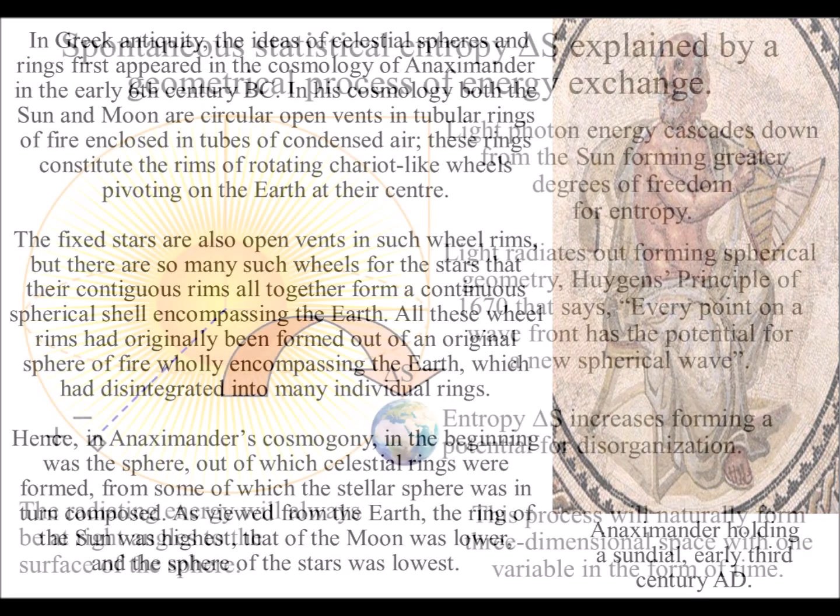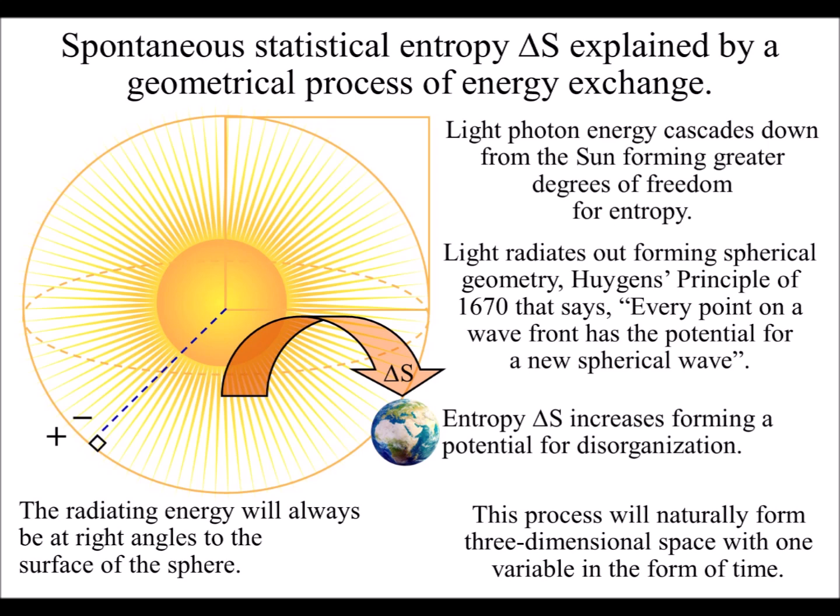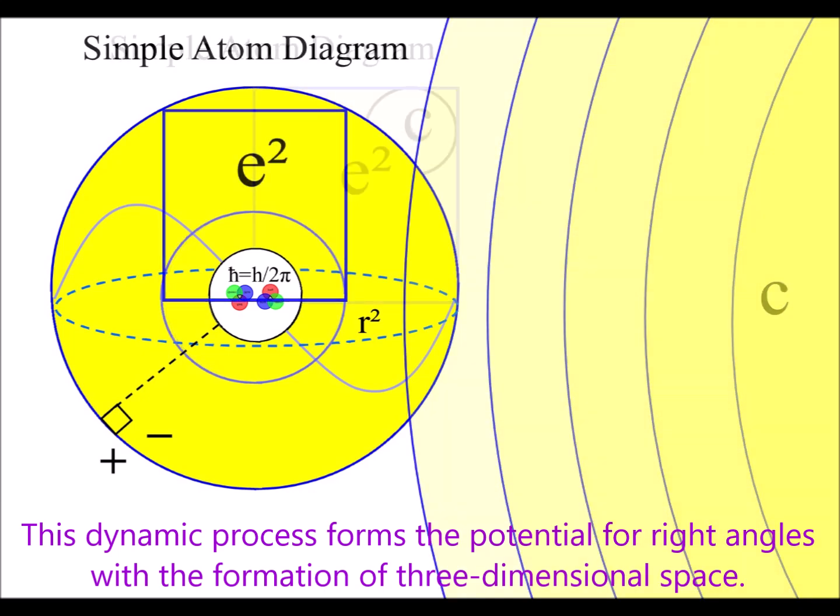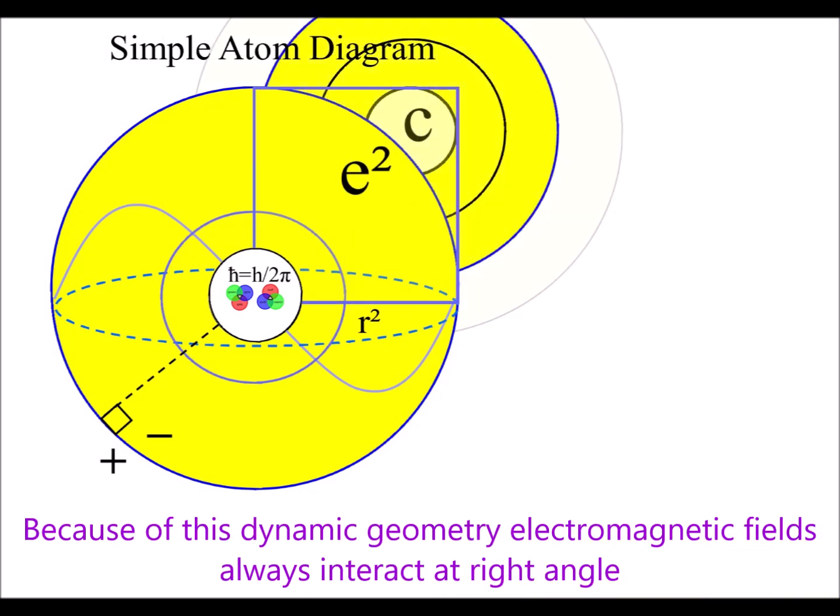In the theory explained in these videos, the universe is a geometrical continuum based on a process of spherical symmetry forming and breaking. Light radiates out forming spherical geometry with the radiating energy always being at right angles to the surface.